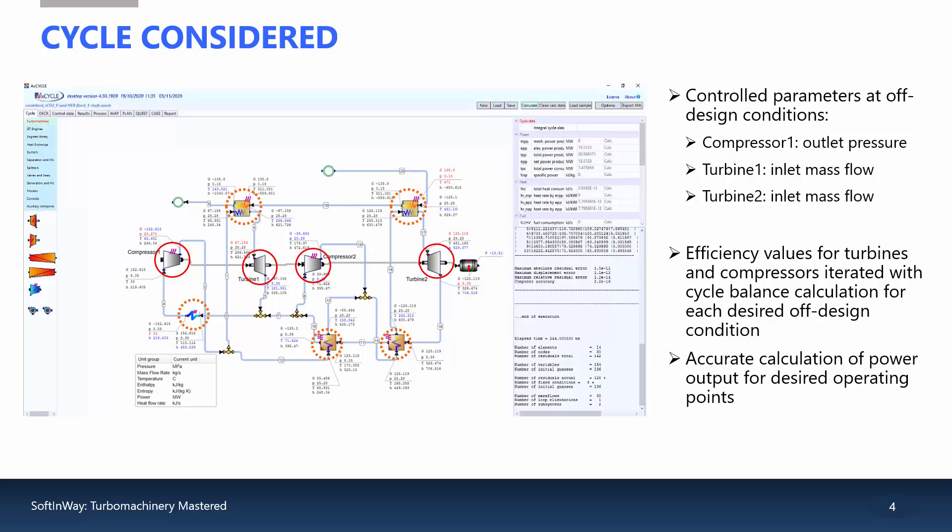Thanks to our cycle calculations, we have the boundary conditions for the components. From there, we use AxeStream to analyze each turbine and compressor to determine their power and respective efficiency so that the generator desired output is achieved.